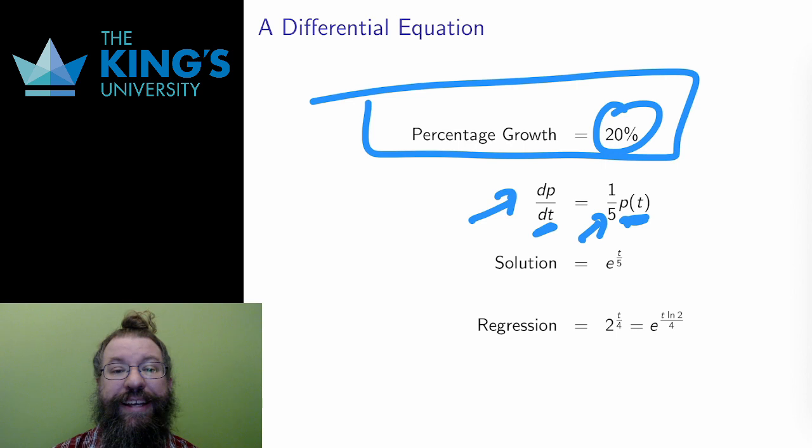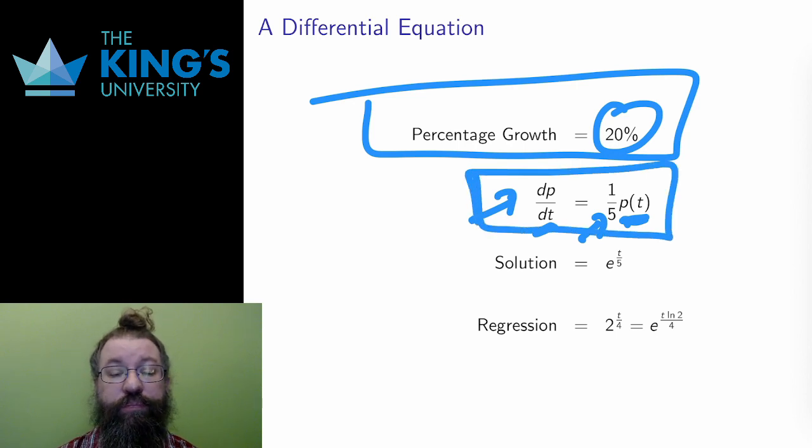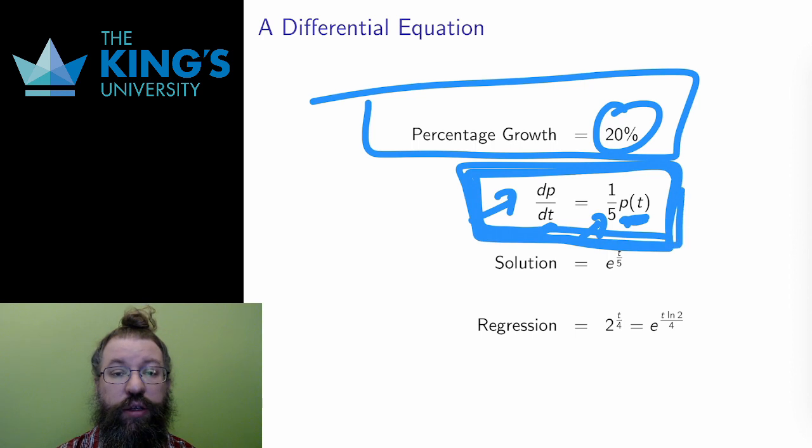What I have produced is a differential equation. It is an equation that involves a function, p(t), and its derivative, dp/dt. It expresses a relationship between the function and its rate of change. This is precisely what percentage growth is, a relationship between the value of a function and its growth. 10% says take 1 tenth of what you currently have, and that is the growth.